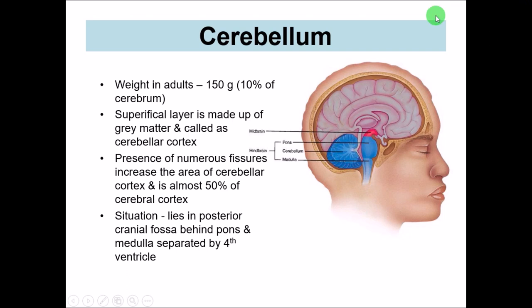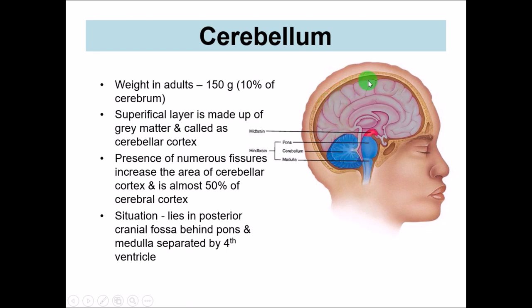Just like the cerebrum, the cerebellum also has a superficial layer made up of grey matter. In the cerebrum we have grey matter outside and white matter inside. Similarly, in the cerebellum we have grey matter outside — grey matter is the collection of cell body neurons — and deep inside we have the white matter, which is mainly the fibres of these neurons. This grey matter is called the cerebellar cortex, similar to that of the cerebral cortex.